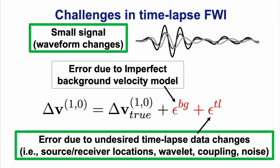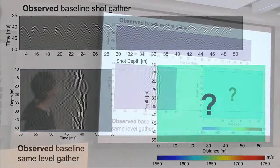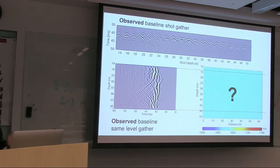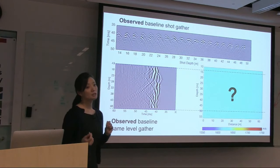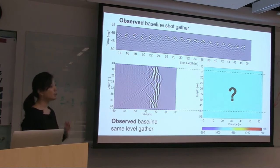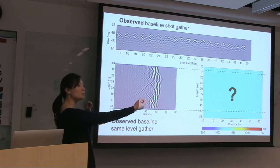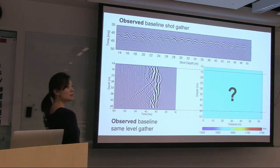To summarize the challenge: we see a small but clear 4D signal. Our undesired time-lapse data changes were confirmed to be nearly perfect acquisition repeatability, so those errors will be very small. Now we address the imperfect background velocity model by performing full waveform inversion on the baseline to get the background velocity model first.